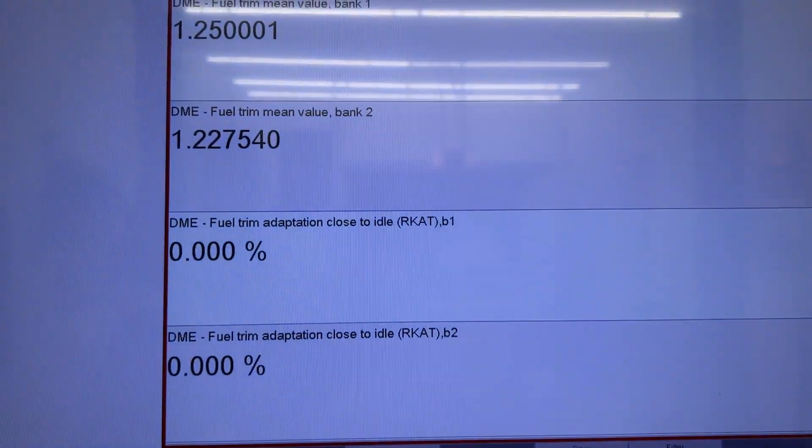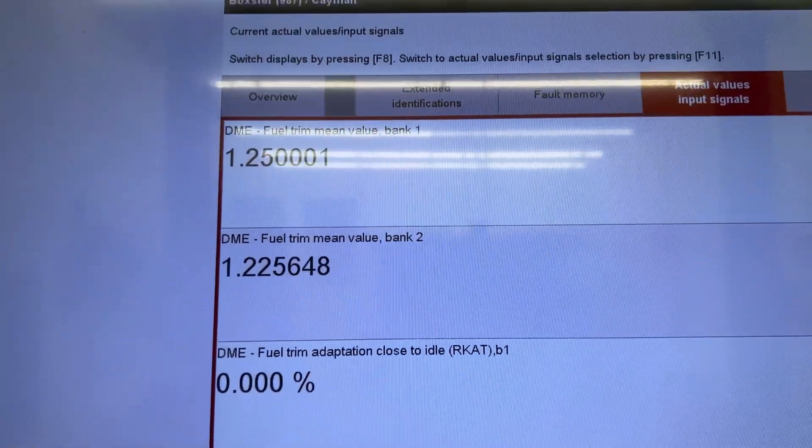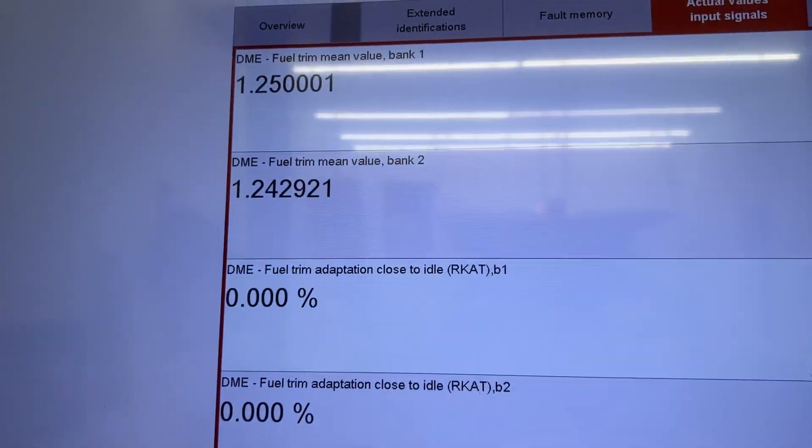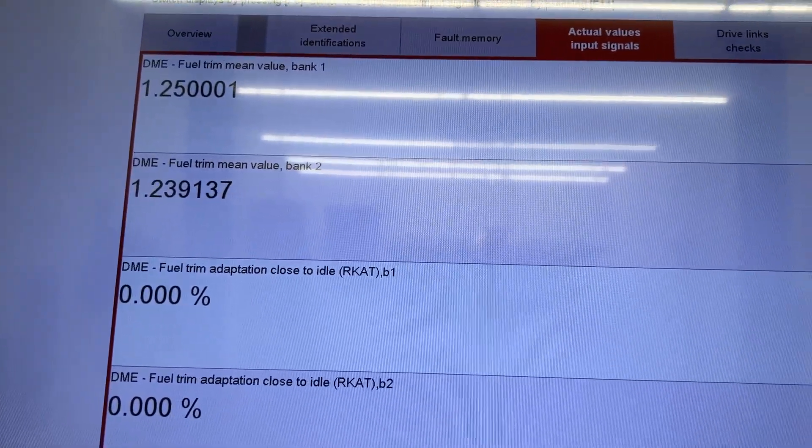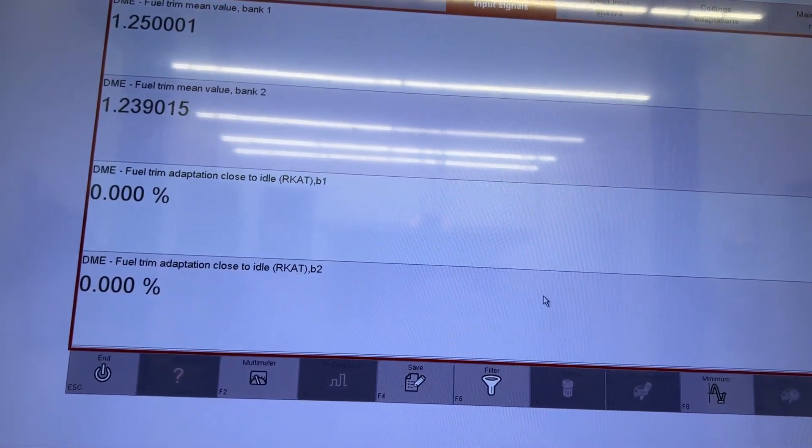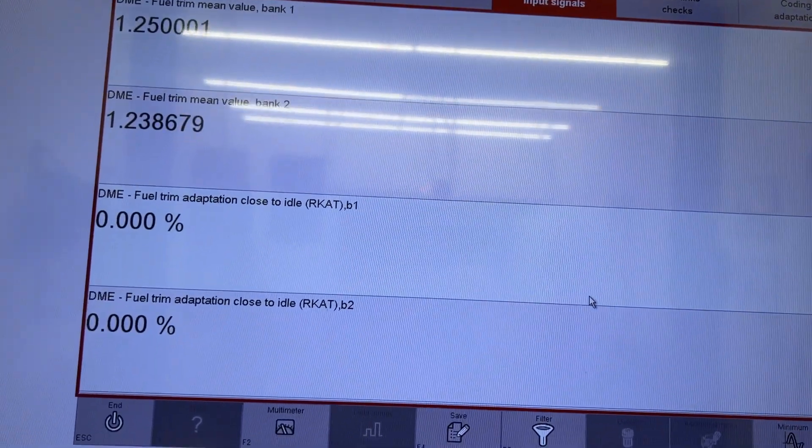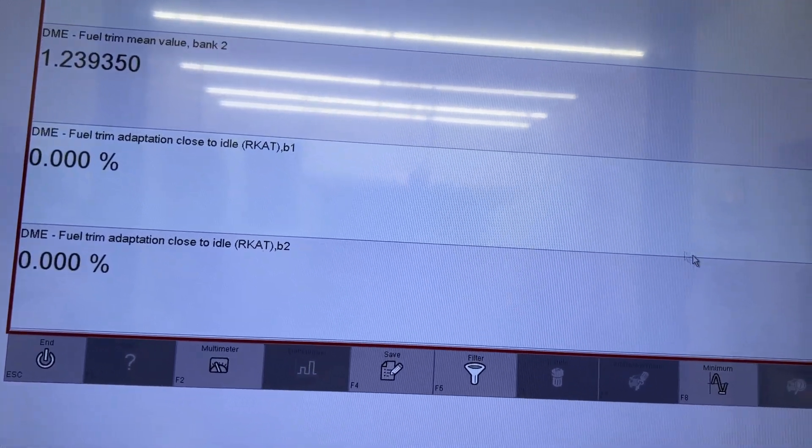All right, so bank one value still is at 1.25. If we let it sit here for a while, it will probably drop back down some. But yeah, so that is your fuel trim and how to read it.